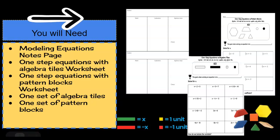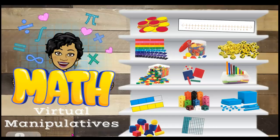You will also need one set of algebra tiles and one set of pattern blocks. If you are completing this flipped classroom at home, you may not have the algebra tiles and pattern blocks. Please look for the virtual manipulatives link in your teacher's Google Classroom, where you may click on a picture of algebra tiles or pattern blocks to take you to a separate link with virtual manipulatives.